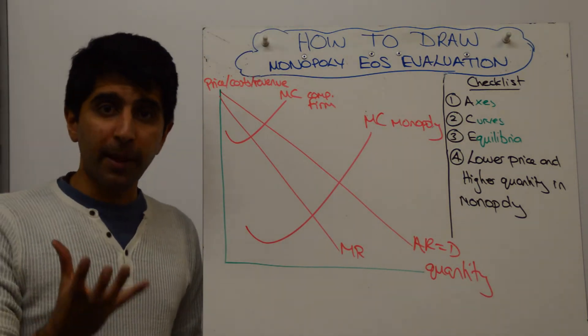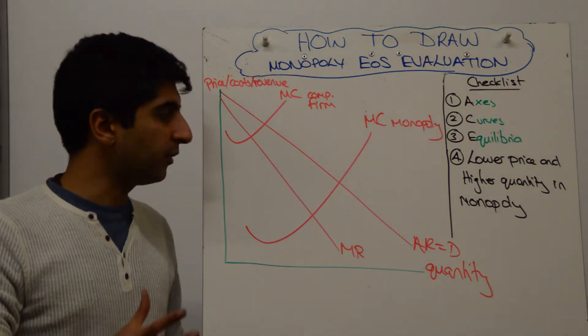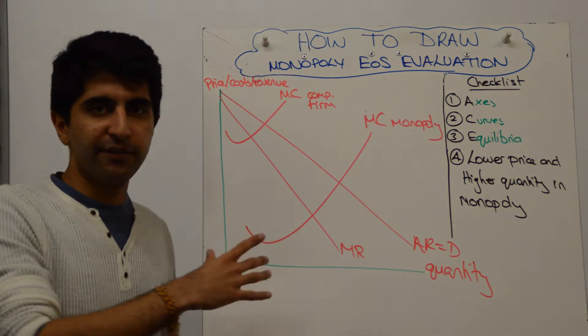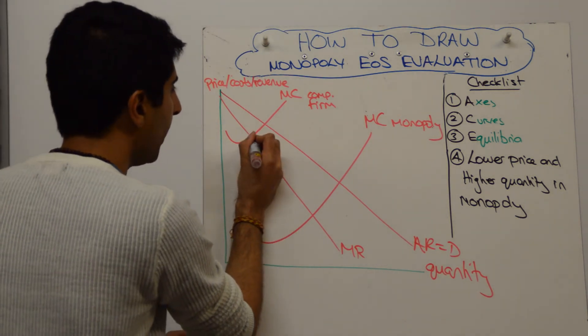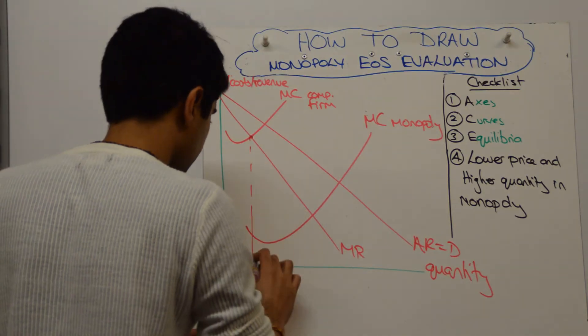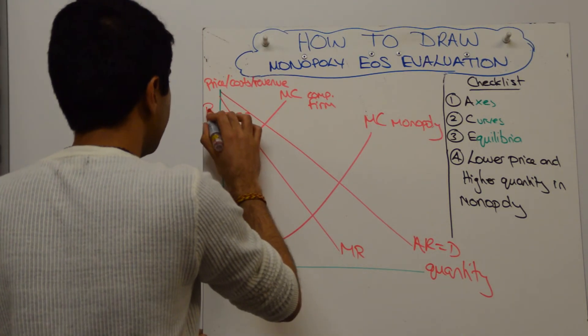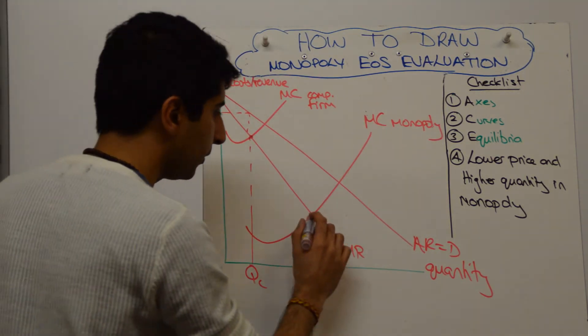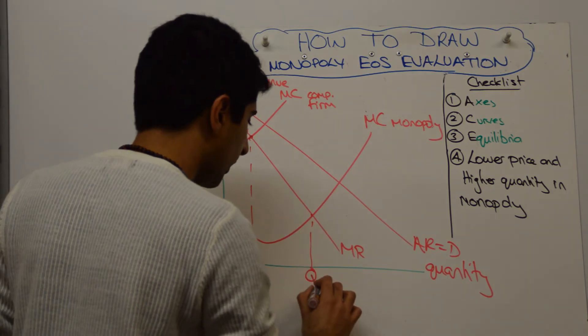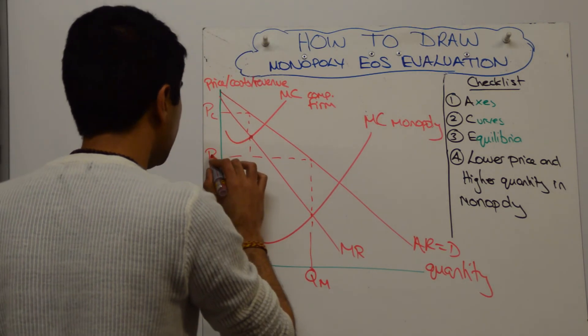Both firms are profit maximizers, we assume. So let's work out the profit maximization level of both the competitive firm and the monopolist, and also the price. So MC equals MR happens here for the competitive firm. That takes us to QC. And read the price off the AR curve, takes us to PC. Okay, do the same for the monopolist. MC equals MR happens there. Call that QM. Read the price it charges off the AR curve, and we get to PM.